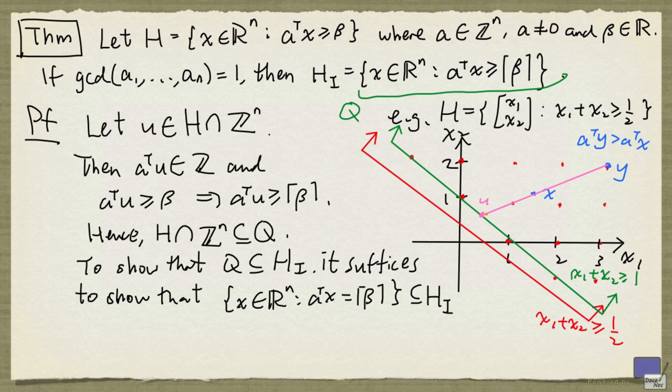So all the points in the line segment between u and y will be in H_i as well, because H_i is a convex set. And that means that x is in H_i as well.